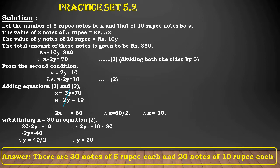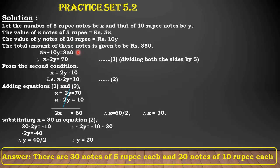Solution. Let the number of 5 rupee notes be X and that of 10 rupee notes be Y. The value of X notes of 5 rupees is equal to Rs. 5X, and the value of Y notes of 10 rupees is equal to Rs. 10Y. The total amount of these notes is given to be Rs. 350. From the first condition, we get 5X plus 10Y is equal to 350. Dividing both sides by 5, we get X plus 2Y is equal to 70. Number this equation as 1.